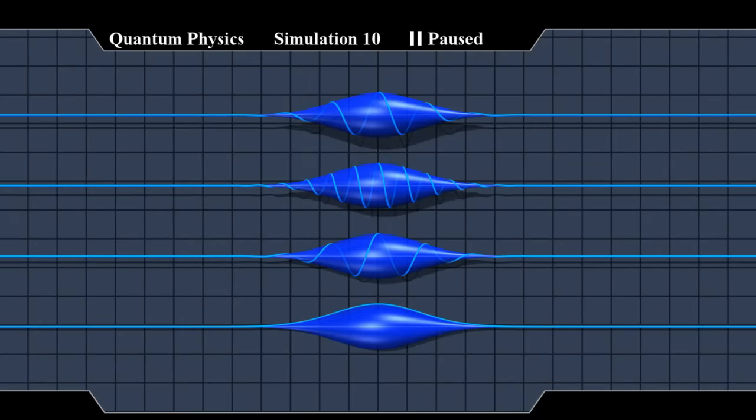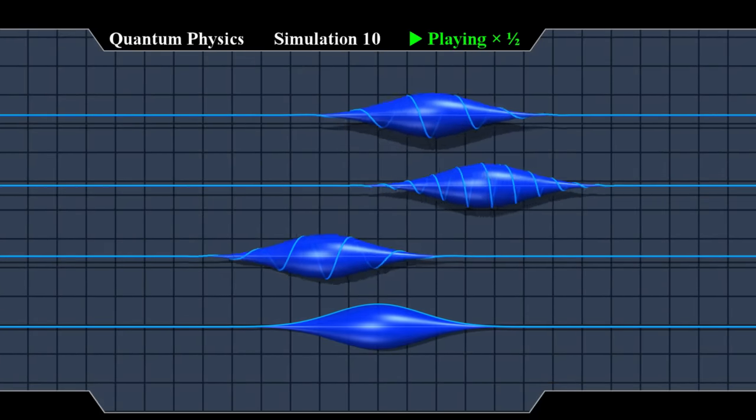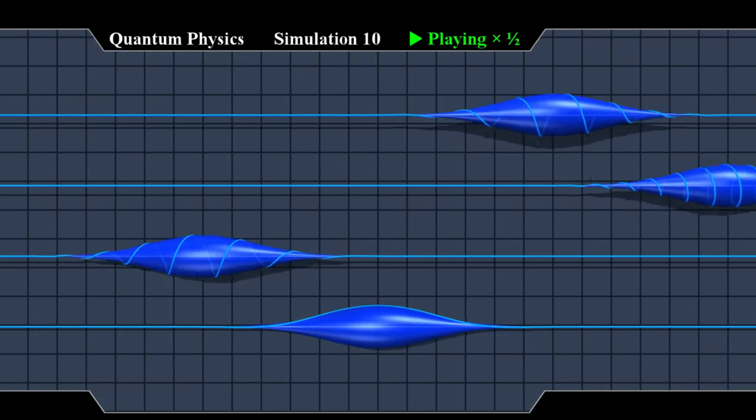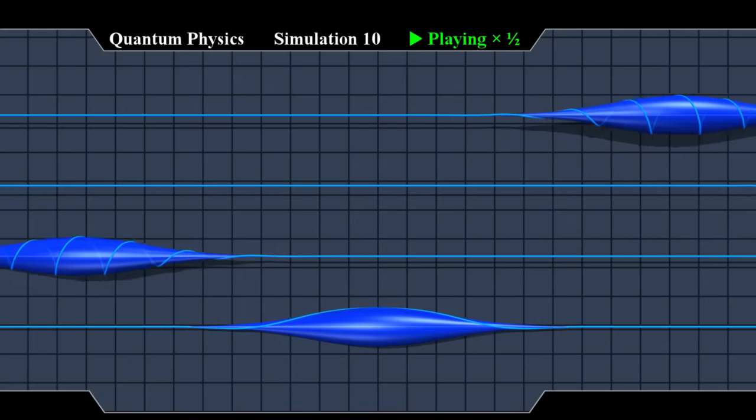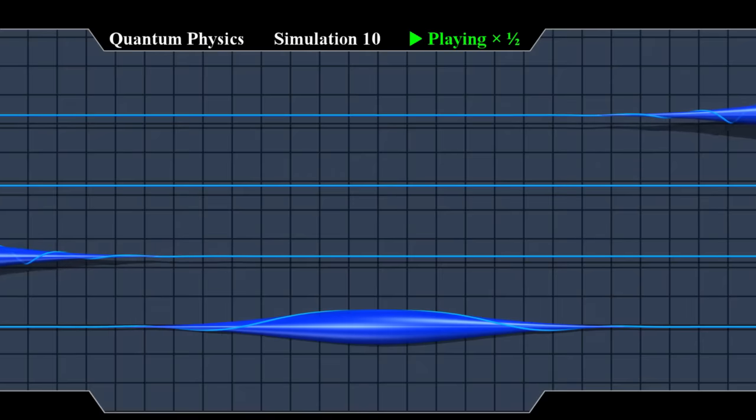Let's see how they evolve with time. The rotations contain information about the particle's velocity. But it's not so easy to interpret.